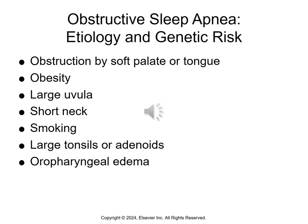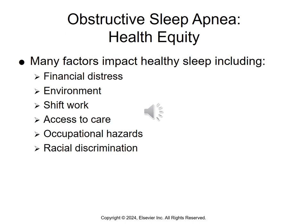OSA is a mechanical obstruction of the soft palate or tongue. Risk factors include obesity, large uvula, short neck, smoking, large tonsils or adenoids — essentially a crowded oropharynx — and oropharyngeal edema. Contributing factors related to health equity include financial distress, a non-therapeutic environment, shift work that disrupts regular sleep rhythm, limited access to care, occupational hazards, and racial discrimination.